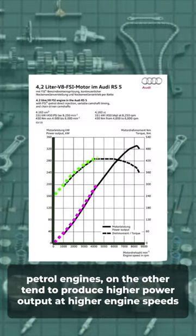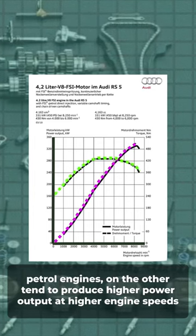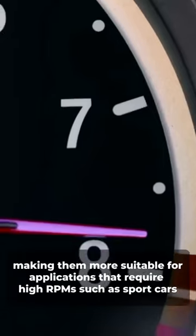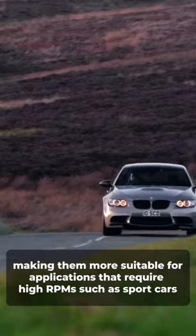Petrol engines, on the other hand, tend to produce higher power output at higher engine speeds, making them more suitable for applications that require high RPMs, such as sports cars.